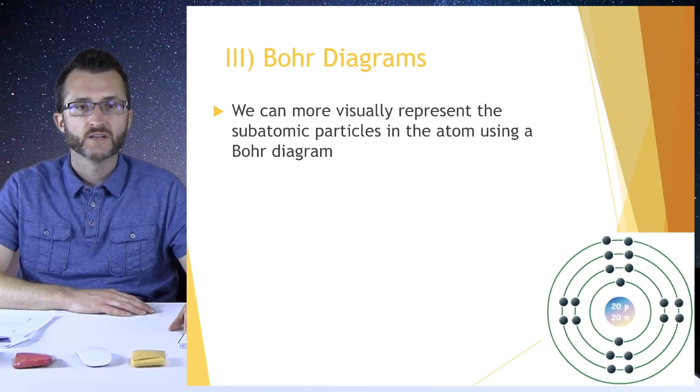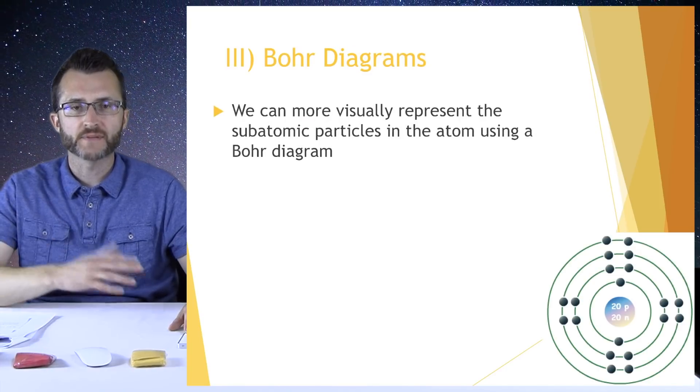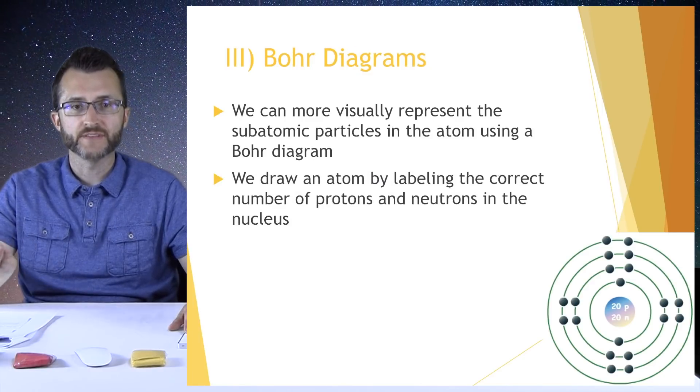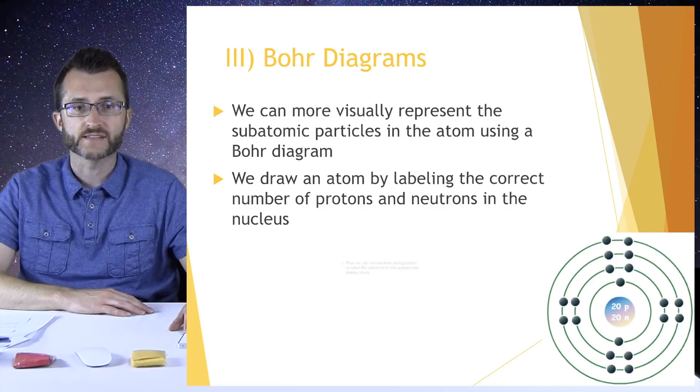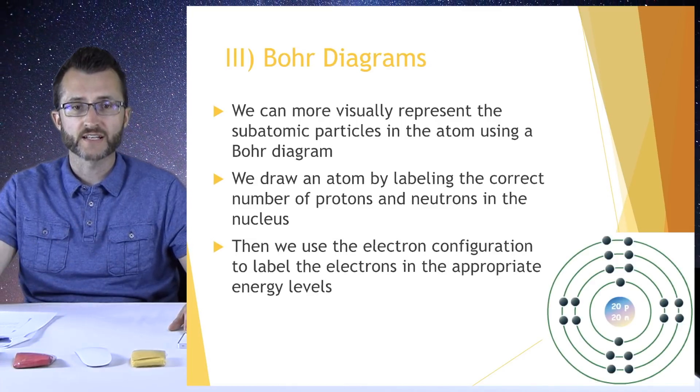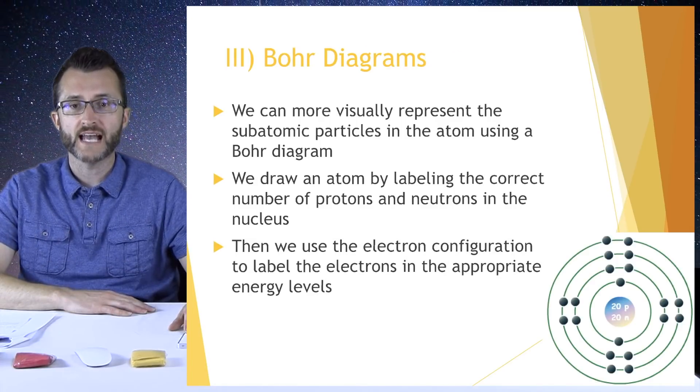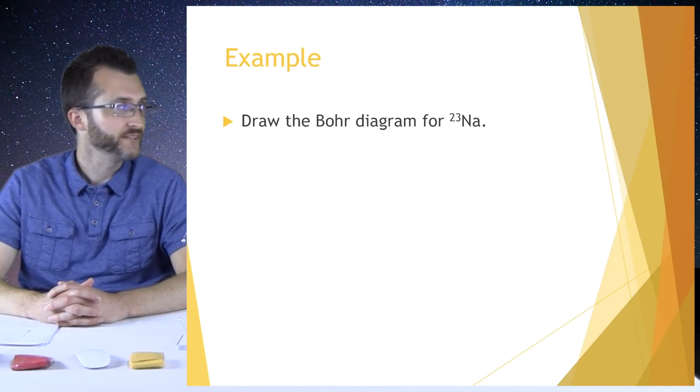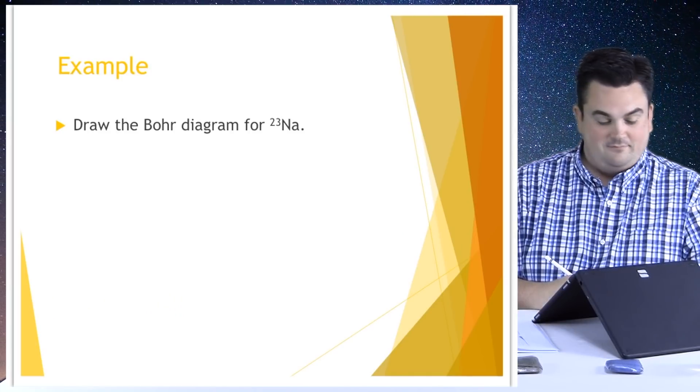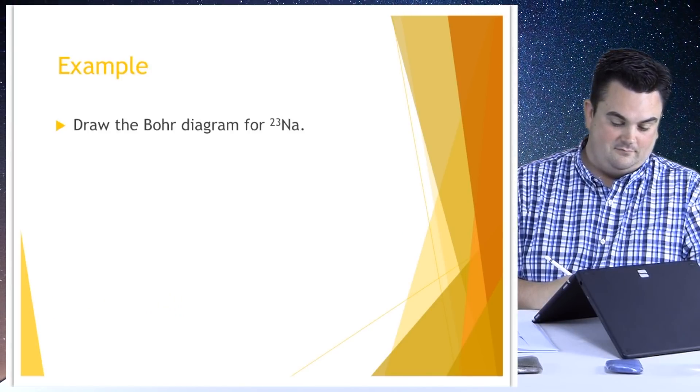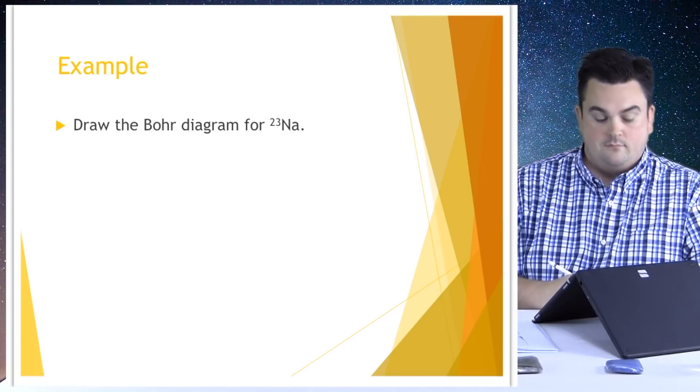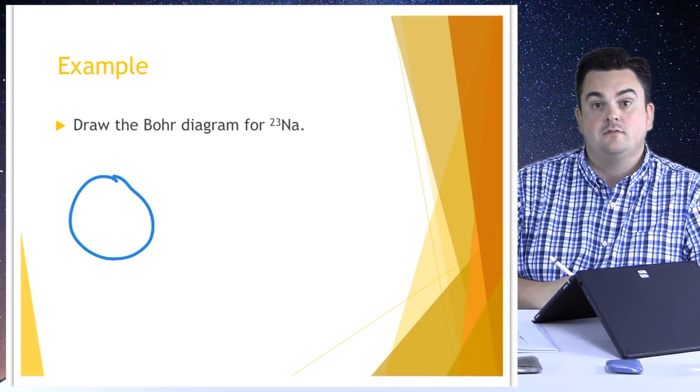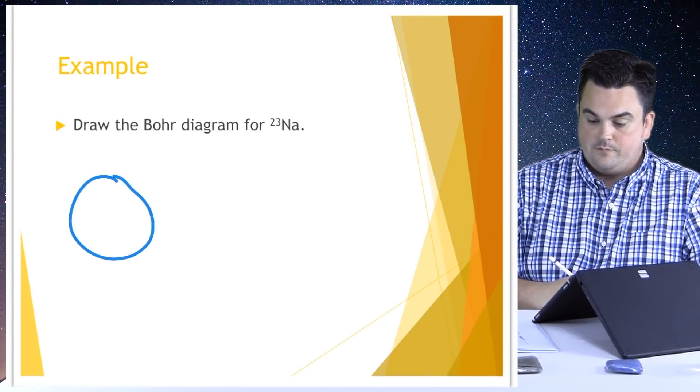Bohr diagrams. We can more visually represent the subatomic particles in the atom using a Bohr diagram. We draw an atom by labeling the correct number of protons and neutrons in the nucleus. Then we use the electron configuration to label the electrons in the appropriate energy levels. Let's take a look at an example of a Bohr diagram. Are we ready? We are. Draw the Bohr diagram for sodium 23. So we're going to start with our nucleus. Let's draw a big circle to represent our nucleus. And we're going to list the number of protons and neutrons in this nucleus.